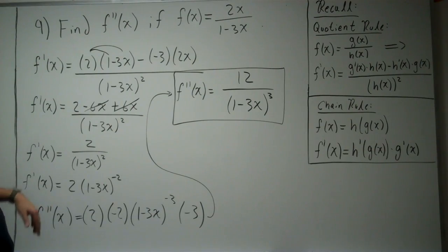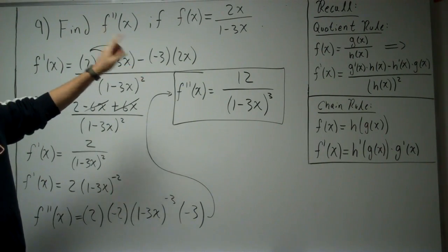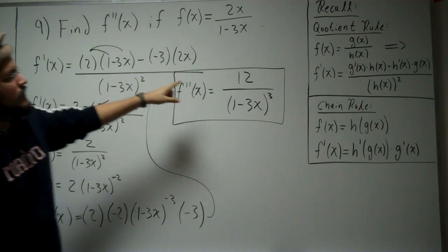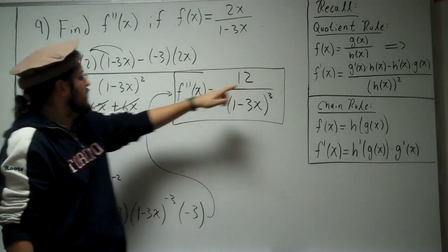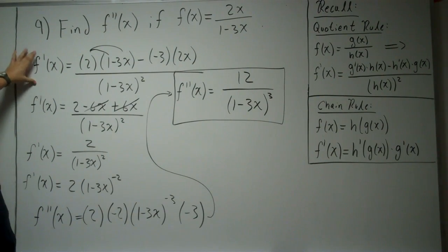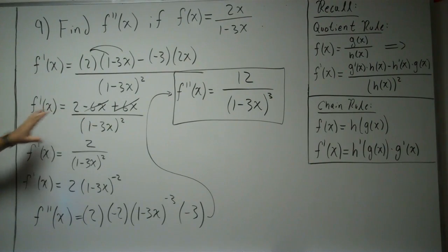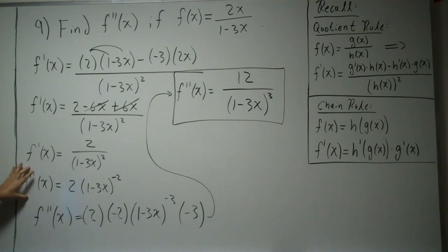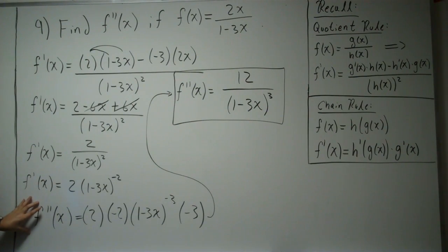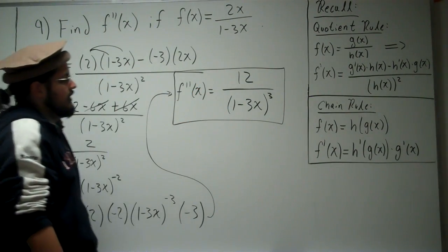To review: we were asked to find the second derivative given that function. We computed the first derivative using the quotient rule — that one line is the calculus, and the rest is just algebra. We simplified and rewrote it with a negative exponent, then applied the chain rule to get the second derivative in one step. The calculus is done, and then it's just algebra to obtain f double prime.